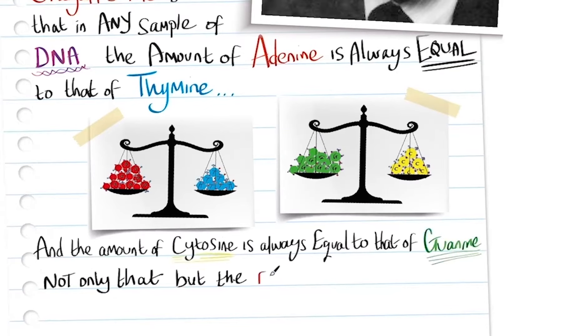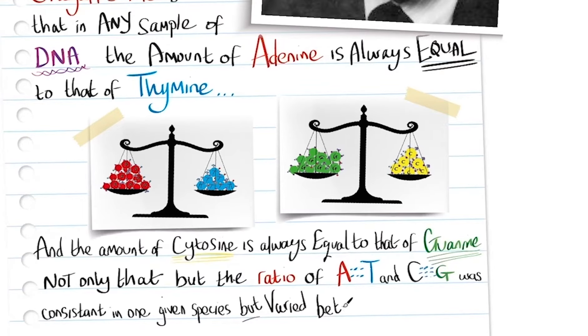Not only that, but the ratio of adenine plus thymine and cytosine plus guanine was consistent in any given species but varied between species.